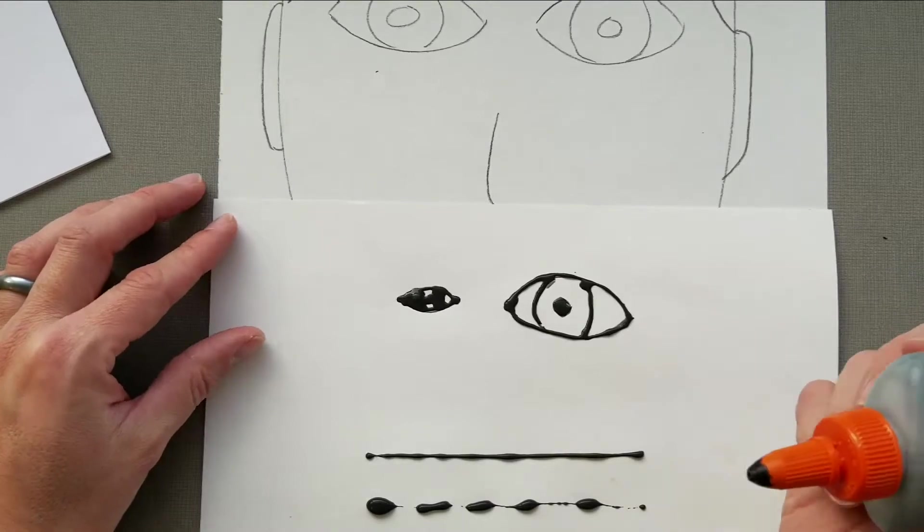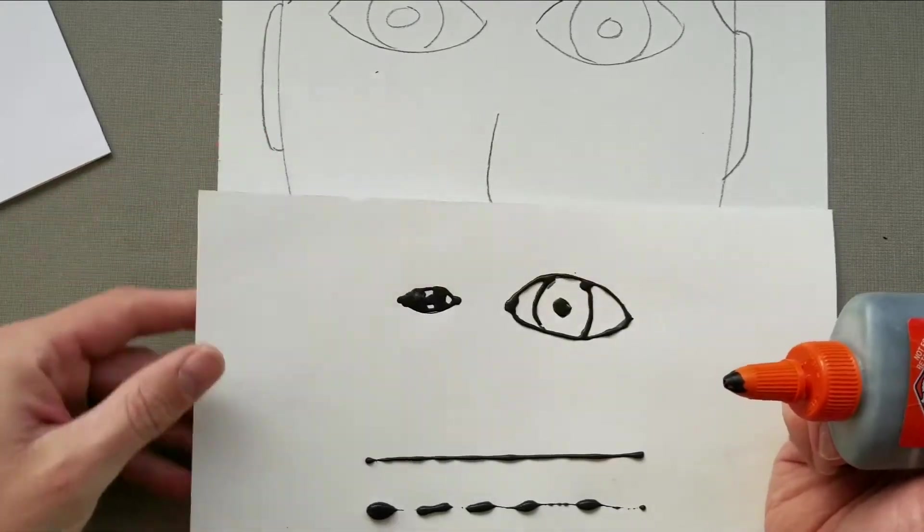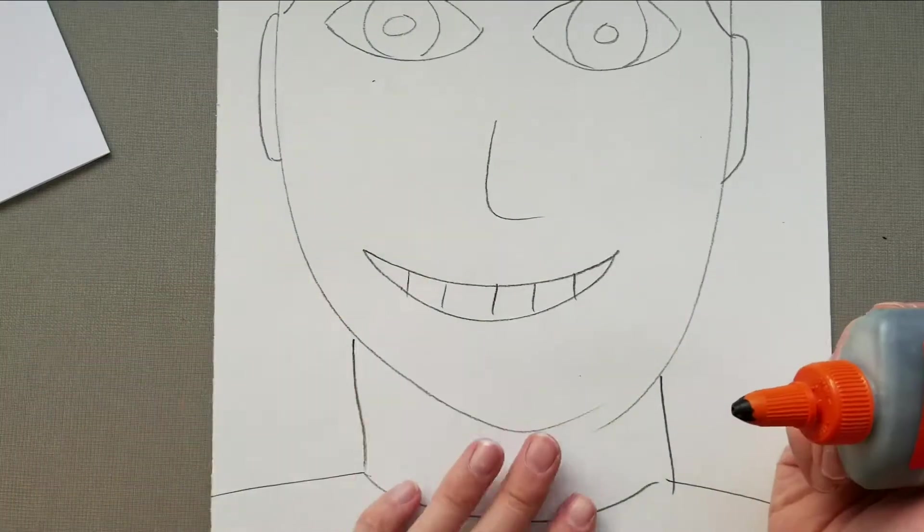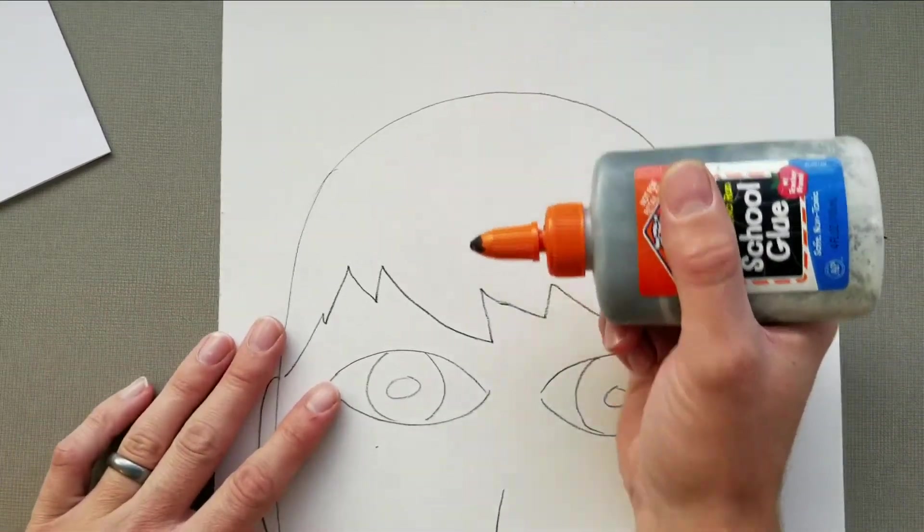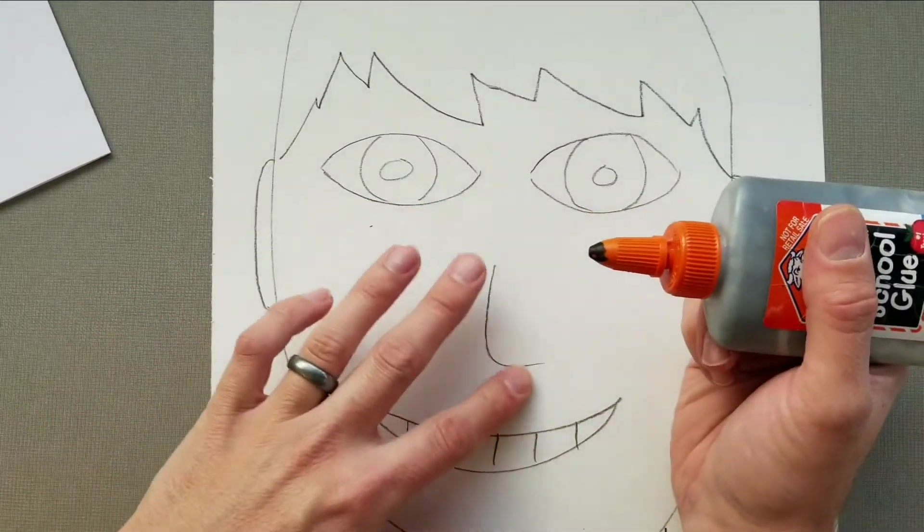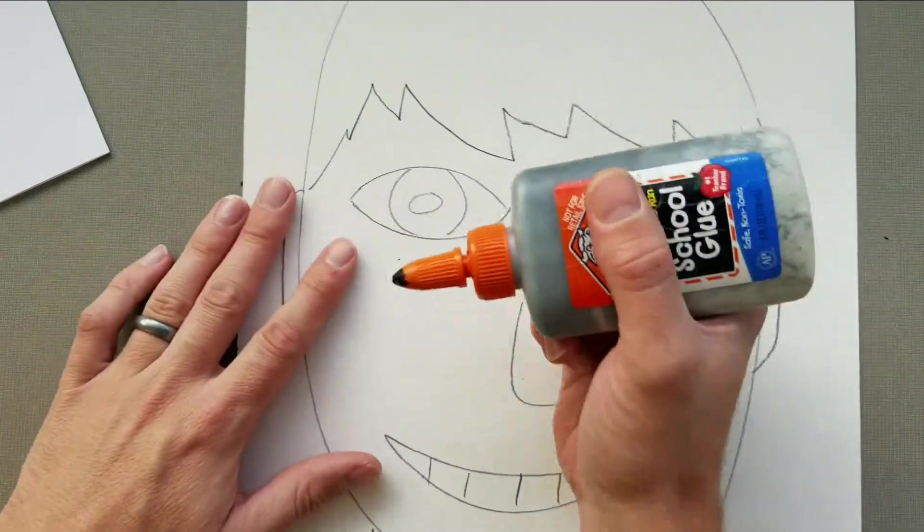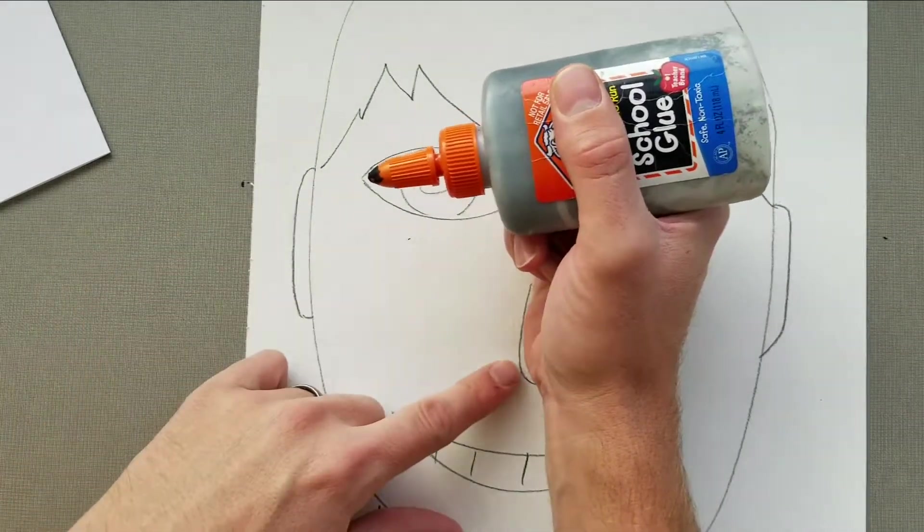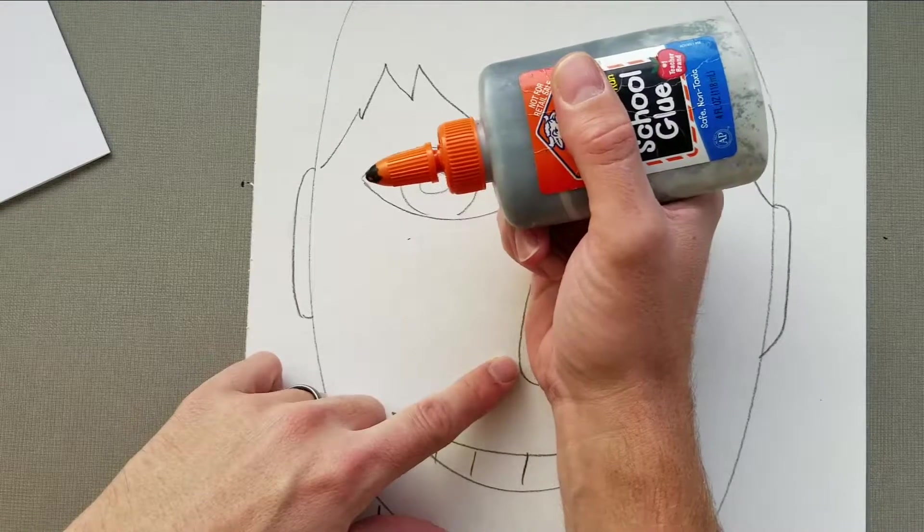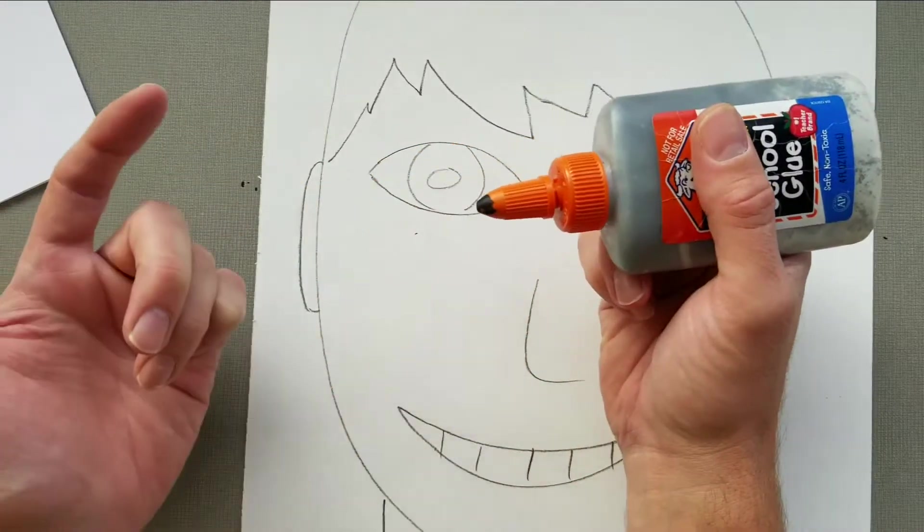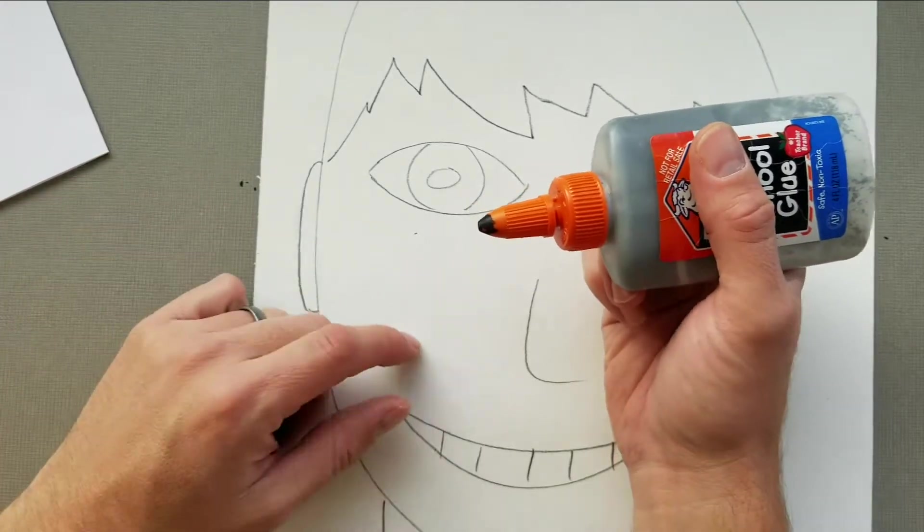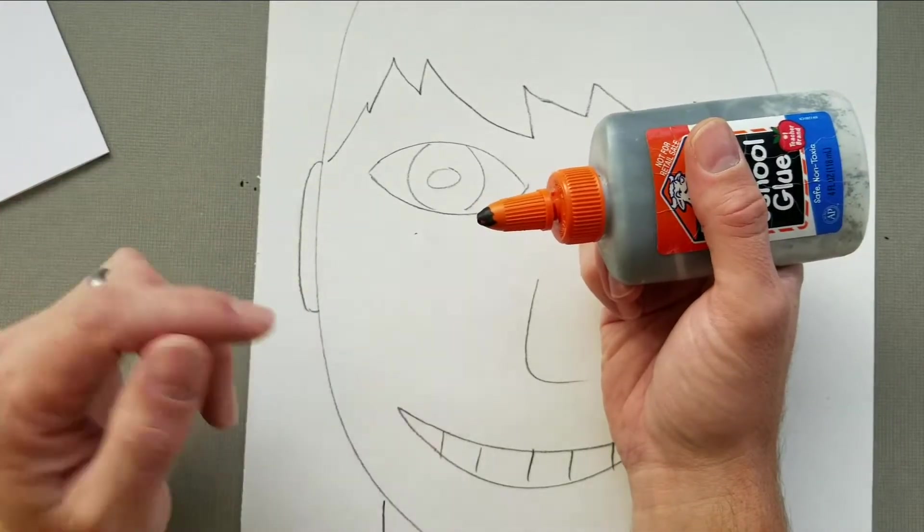Okay, so when you start working on your actual final, you want to work from the very top towards the bottom. If my nose had been glued already and I'm trying to do my eyes, you can see that my hand is right over that wet glue. If you smudge it, there's nothing we can do to fix it - you'll just have a smudge on your final.